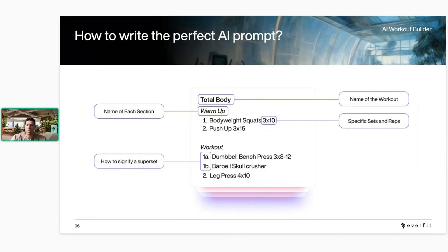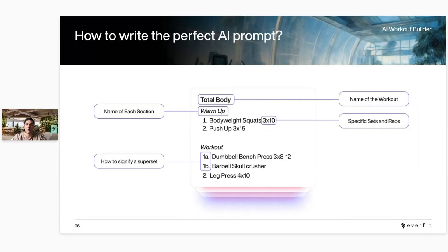If you ever want to superset anything, a great way to do it is using labels like 1A, 1B — that will automatically superset those exercises. You can also do multiple supersets: if you do 1A, 1B followed by 2A, 2B, it'll superset the first two and then the second two as separate supersets.